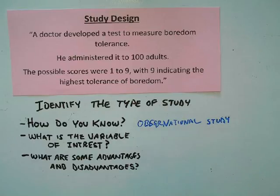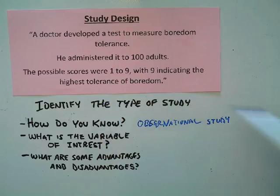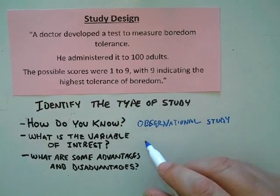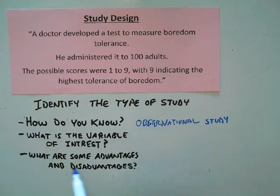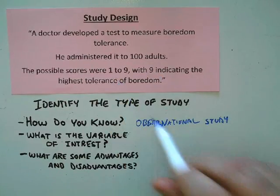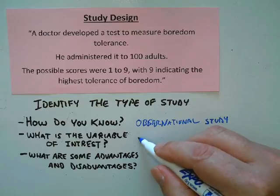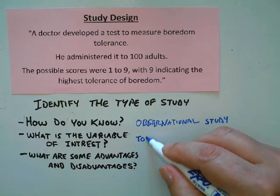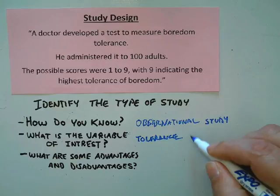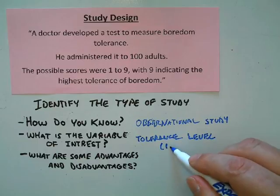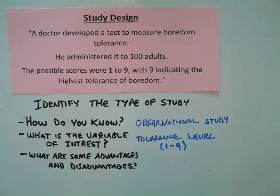What is the variable of interest? It's the level of boredom tolerance that they're measuring. The people are the subjects, but they're not the variable of interest — we're really measuring the values one to nine, so the variable of interest would be the tolerance level, with values one to nine.